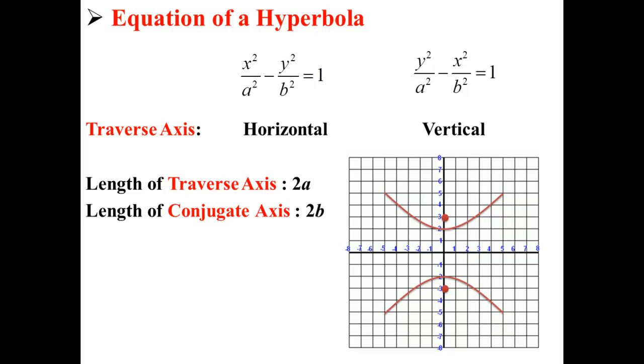The length of the traverse axis is equal to 2a, while the length of the conjugate axis is equal to 2b.